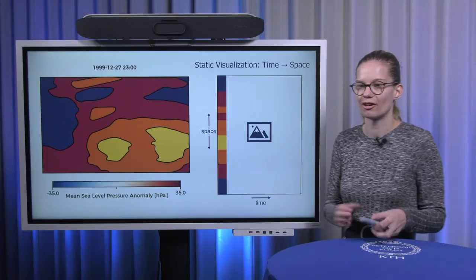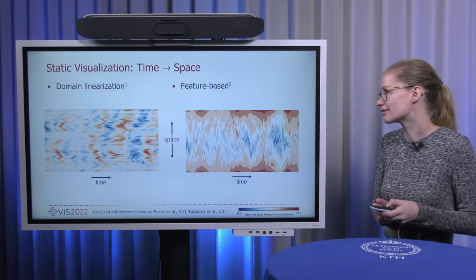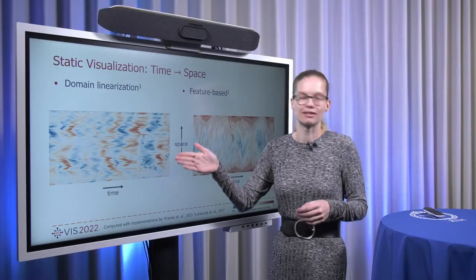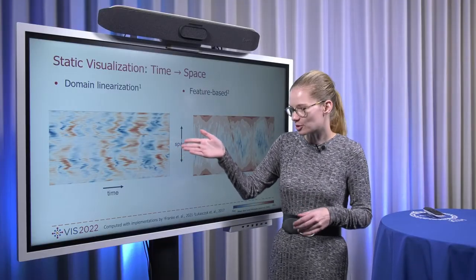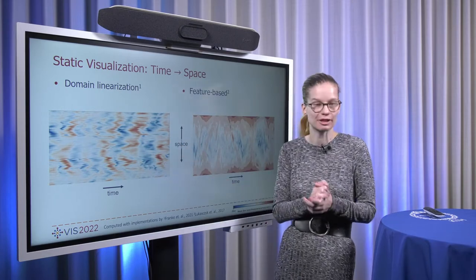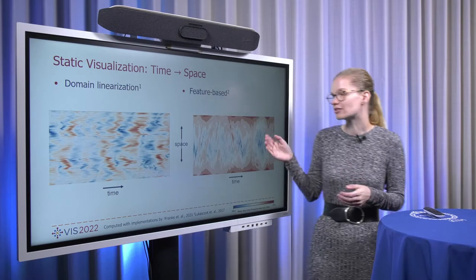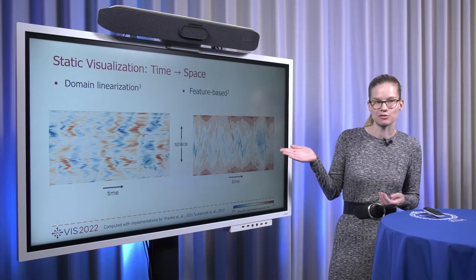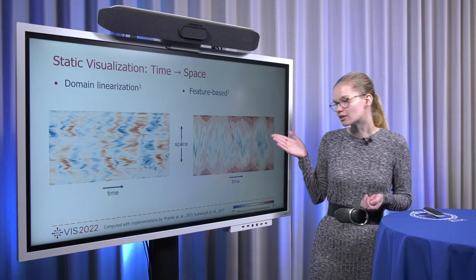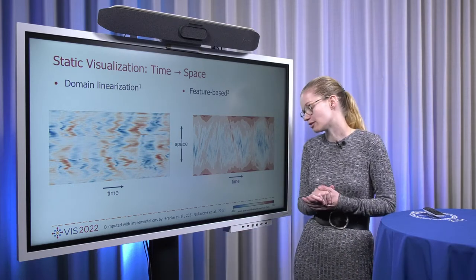Both of these are methods that have been presented and studied before. Here on the left we have the domain linearization. For example, this one is a Hilbert curve over time computed with the implementation by Franke et al. And this here on the right is a feature-based visualization, a nested tracking graph specifically computed with the implementation by Lukacik et al.